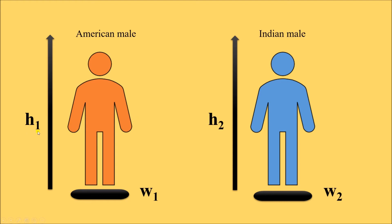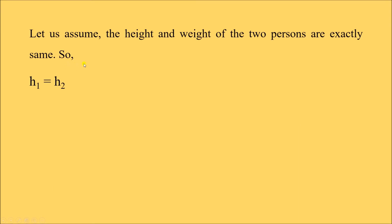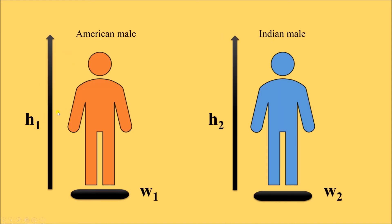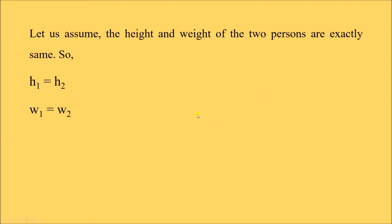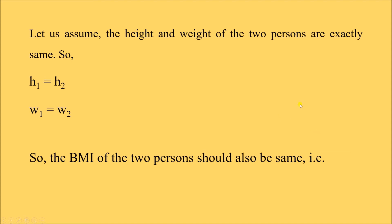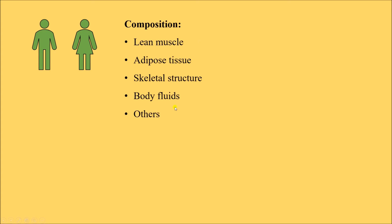We have four values: H1 and H2 (heights of the American and Indian males), and W1 and W2 (their body weights). For the sake of this discussion, let us assume both persons have exactly the same height and weight: H1 equals H2 and W1 equals W2. Because of this, the BMI of the two persons should also be exactly the same, since BMI is calculated as body weight in kilograms divided by the square of height in meters.